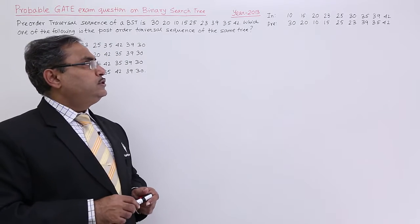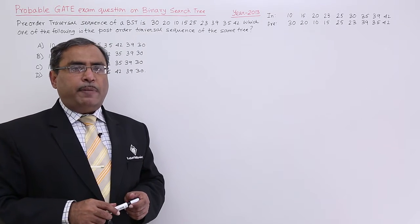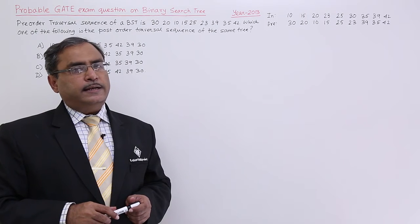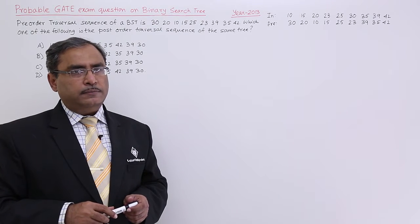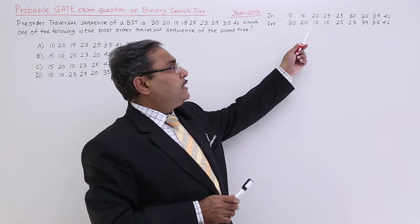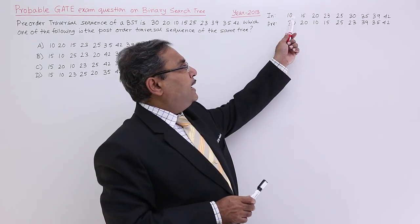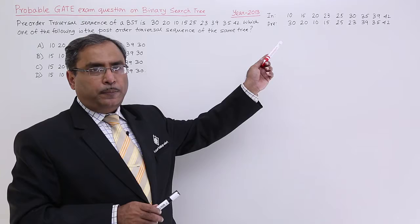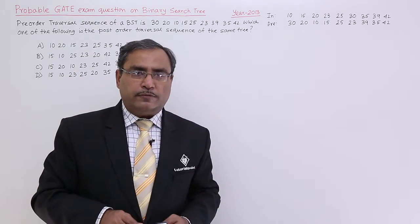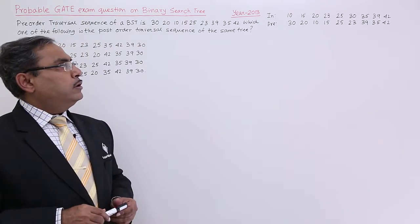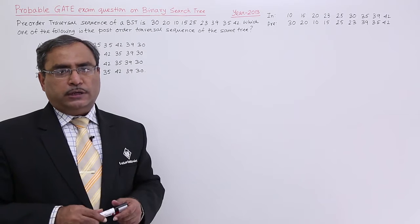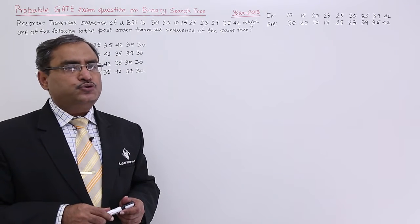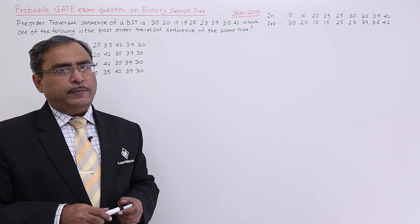To solve this one, it is quite obvious that in case of a binary search tree, if you go for in-order traversal then data items will be obtained in ascending order. So that means if you take this data and put them in ascending order, the sequence obtained is nothing but the in-order traversal. From the in-order and pre-order, we can easily construct the tree and then get the post-order traversal.